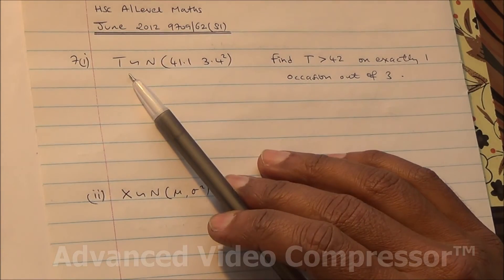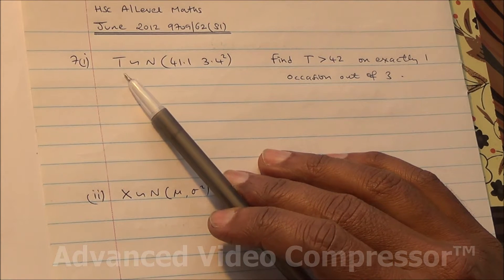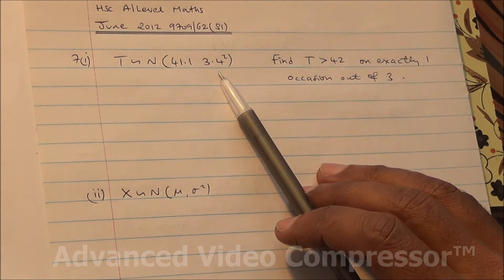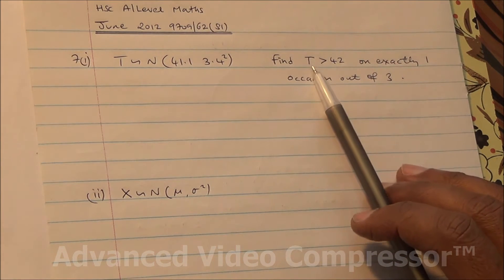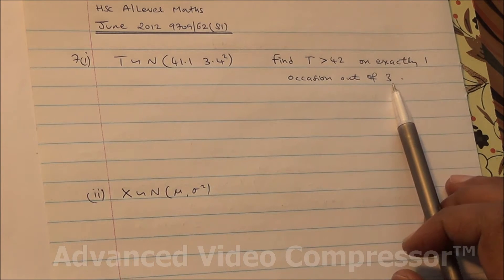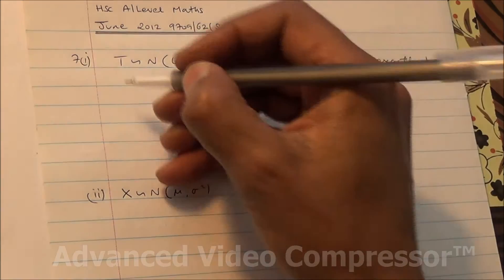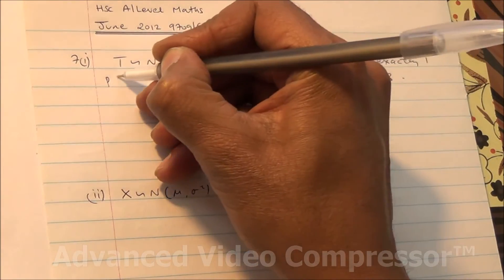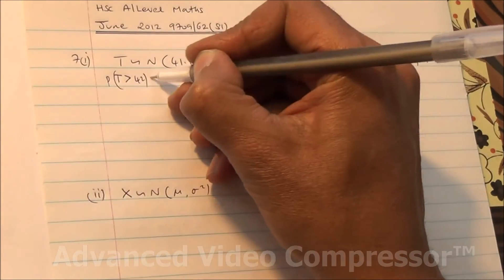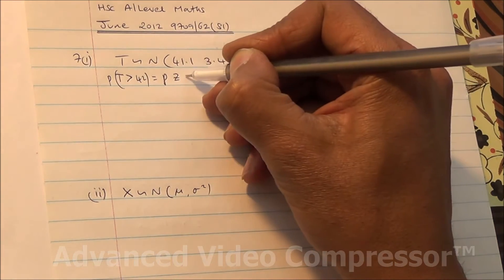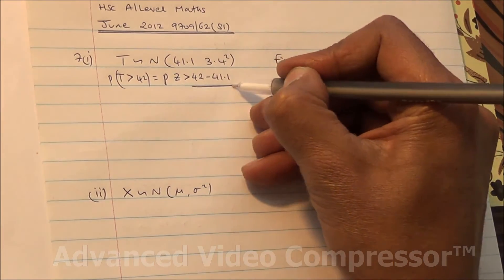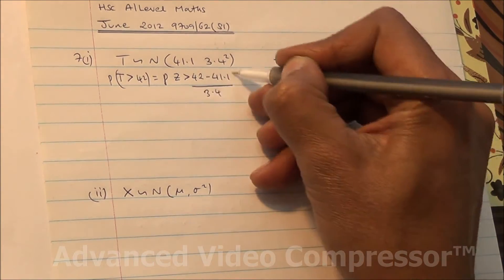It follows that the time taken to play Beethoven's symphony follows a normal distribution with mean 41.1 and standard deviation 3.4. We need to find the probability that it takes more than 42 minutes on exactly one of the three occasions. Therefore, we standardize: P(z > (42 - 41.1) / 3.4).